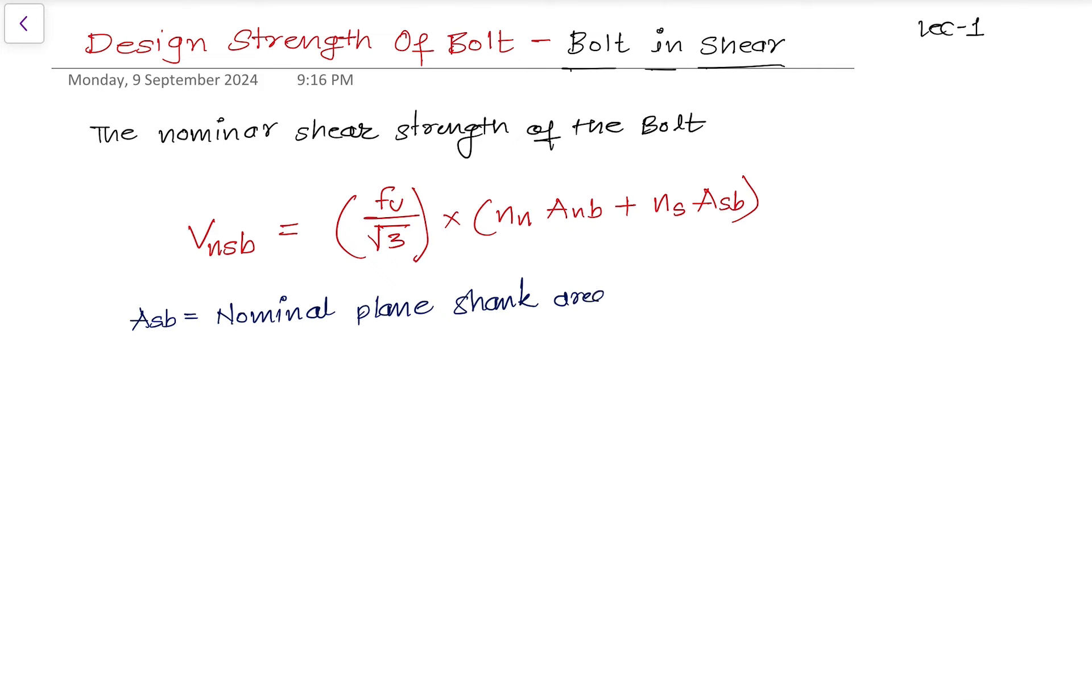If you have any doubts, please drop me a comment in the comment section. The A_sb is the net shear area of the bolt, the net shear area of the bolt at threads. Now f_u is the ultimate tensile strength of the bolt.